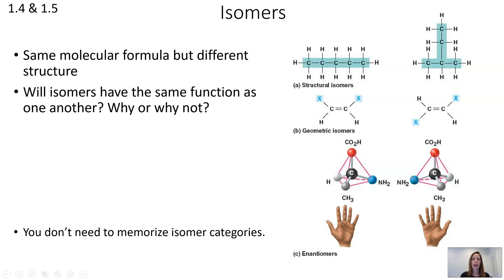Let's talk about isomers. Isomers have the same molecular formula but a different structure. If they have the same molecular formula but a different structure, will they have the same function? Even though isomers have the same molecular formula, because they have a different structure they have a different function in most cases. Remember there's a connection between structure and function — when the shape of something changes, that impacts its behavior.